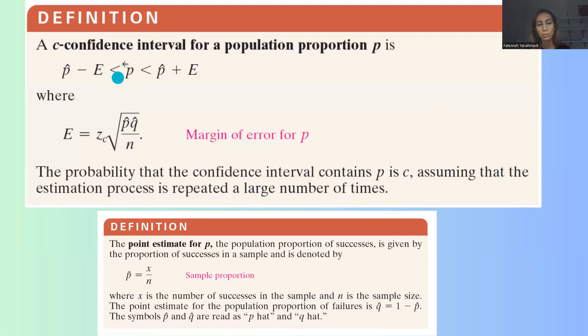The population proportion denoted by p is bounded between two numbers: one number on the left, which is p-hat minus the margin of error, and on the right hand side you have p-hat plus the margin of error.